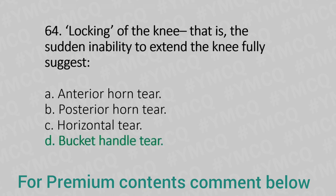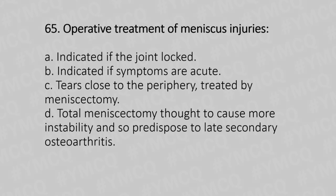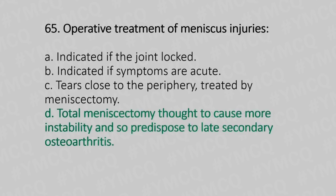Now let's move to question number 65. Operative treatment of meniscus injury. Option A: indicated if the joint is locked. Option B: indicated if the symptoms are acute. Option C: tear close to periphery treated by meniscectomy. Option D: total meniscectomy thought to cause more instability and predisposed to late secondary osteoarthritis. And the answer is Option D, total meniscectomy thought to cause more instability and predisposed to late secondary osteoarthritis.